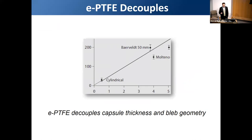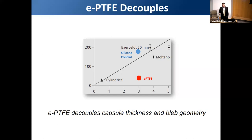The important finding from our study was that ePTFE devices formed thinner blebs than silicone controls — in other words, ePTFE successfully decoupled the capsular thickness-to-geometry relationship. Plotting our average results on Wilcox's curve: the silicone control capsule was well predicted by the relationship, while the ePTFE took the capsule off this curve. For the same device size, in the presence of aqueous flow and wall tension, the ePTFE prototypes do not incite the same magnitude of scarring response — collagen laid down is about five times less thick than the control.